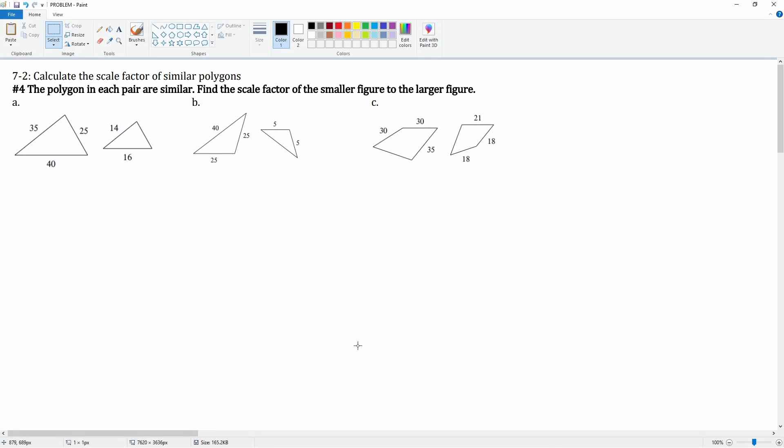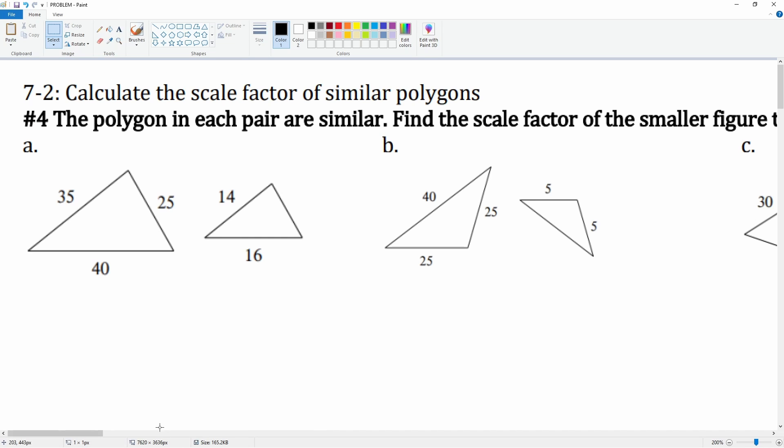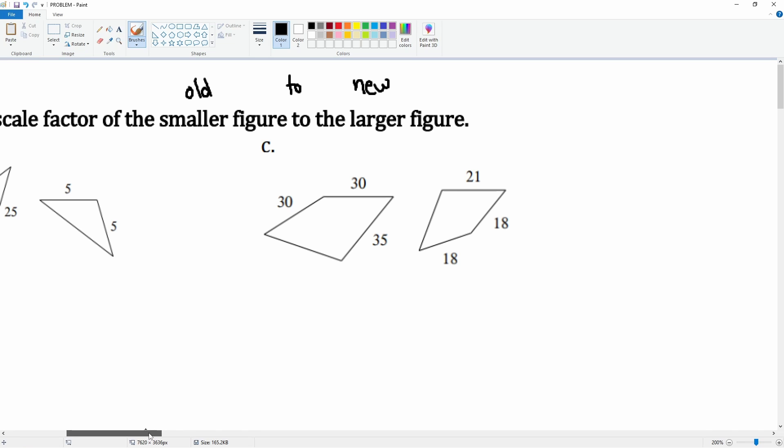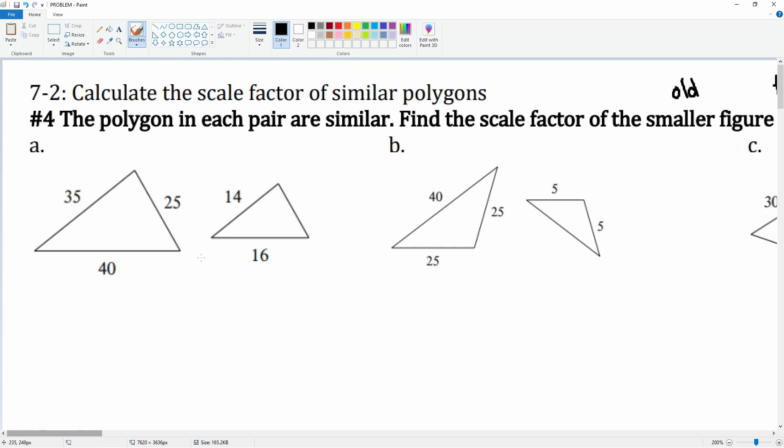Number four: the polygons in each pair are similar. You're going to find the scale factor from the small figure to the large figure. I want you to be very careful here - the small figure to the large figure. This means that the small figure is considered to be the old, the large figure is going to be the new. Okay, I want you to understand that old is the small, the new is the large.